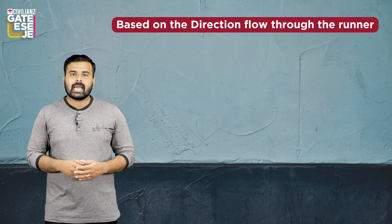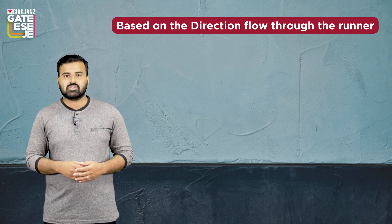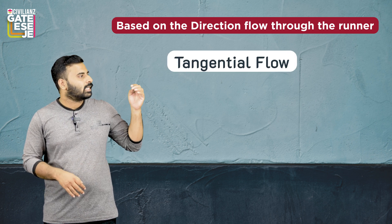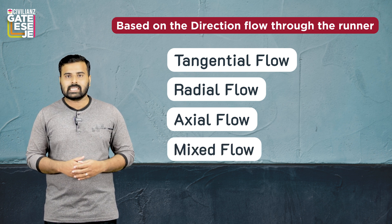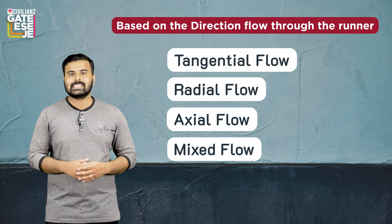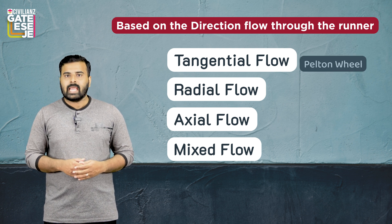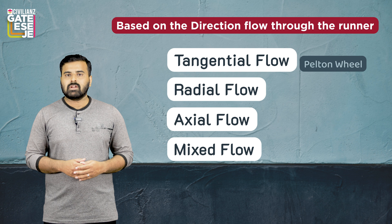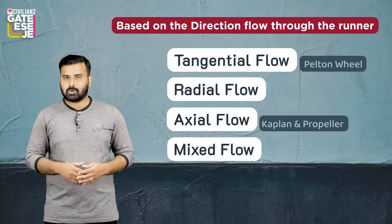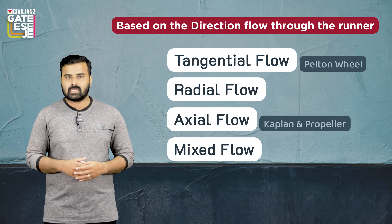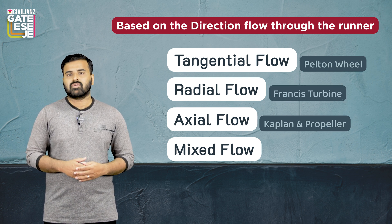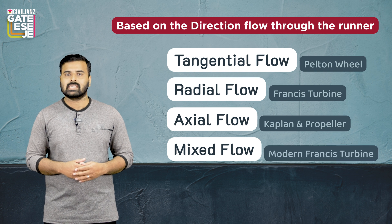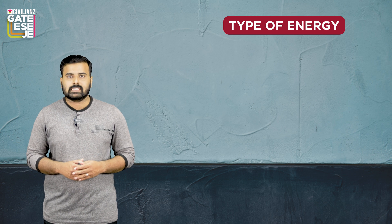Based on the direction of flow of water through the runner, turbines are classified into four types: tangential, radial, axial, and mixed flow. If the direction of flow through the runner is tangential, the turbine is known as a tangential flow turbine, and the example is the Pelton wheel. In axial flow turbines, the example is Kaplan and propeller turbines. In radial flow turbines, the example is the Francis turbine, and the example for mixed flow is the modern Francis turbine.